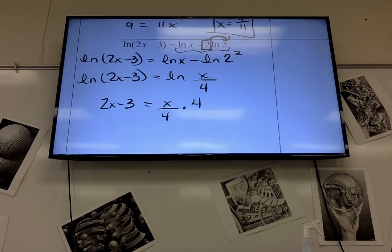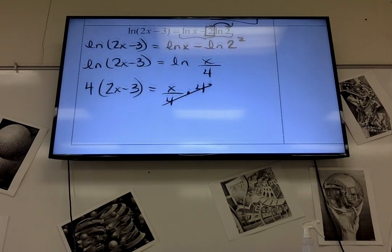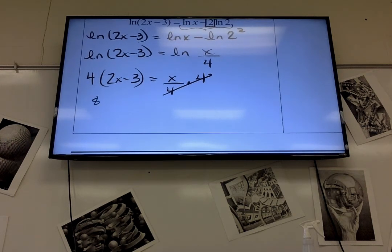Multiply both sides by 4. 8x minus 12 equals x. Subtract 8x, you get negative 7x. Divide by negative 7, x is positive 12 over 7.